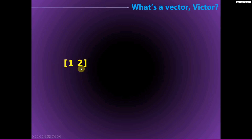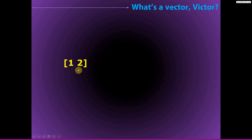In an algebraic sense, a vector is just a collection of numbers organized into an array. Here we have a vector [1, 2] — just a collection of two numbers. There are two elements: the first element and the second element. These are often referred to as dimensions, so this would be the first dimension and the second dimension. This is a two-dimensional vector, but it's really just an ordered collection of numbers.